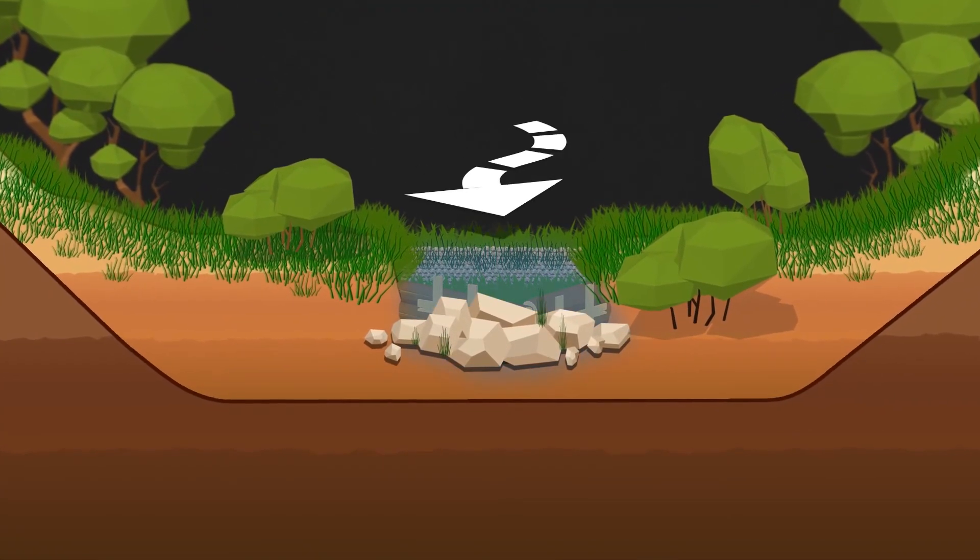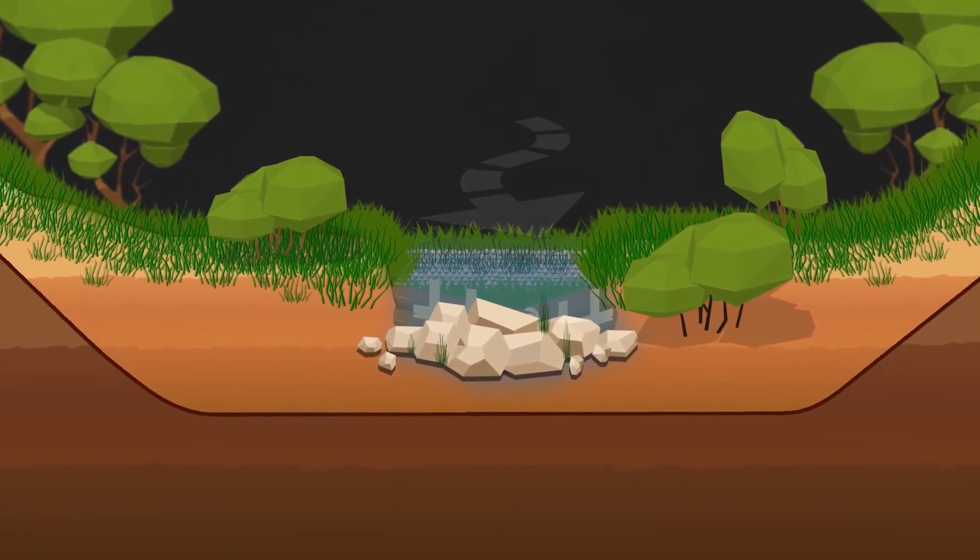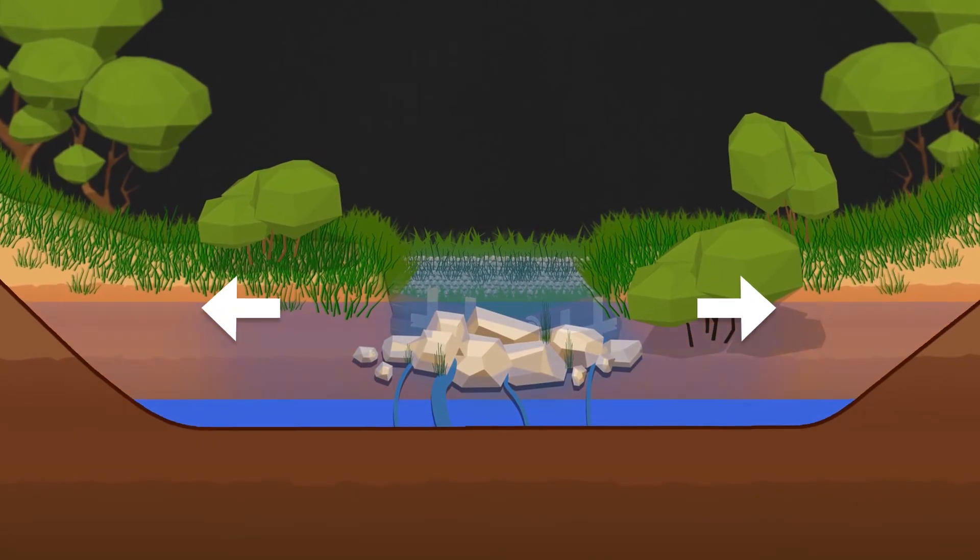The structures are designed to raise the water level of the stream and to slow and filter the flow, giving it a chance to infiltrate and recharge the groundwater.